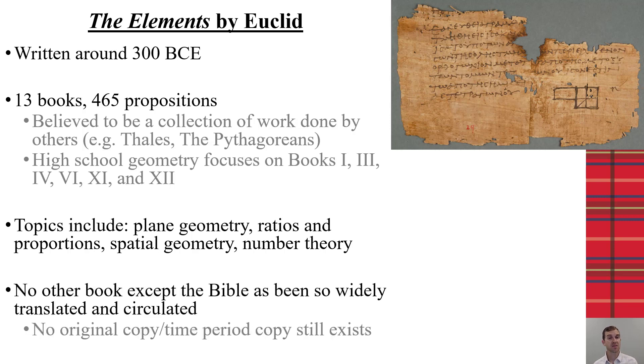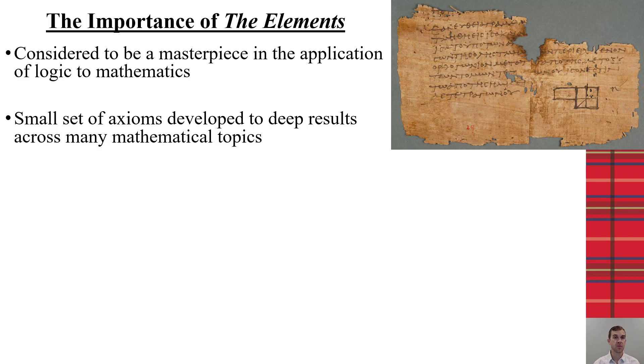Since its time, it is considered the second most popular book by production behind the Bible. Nothing else has been as widely translated or circulated. One of the interesting things is because of how many times the city of Alexandria was conquered, there is no original copy from this time period that still exists.